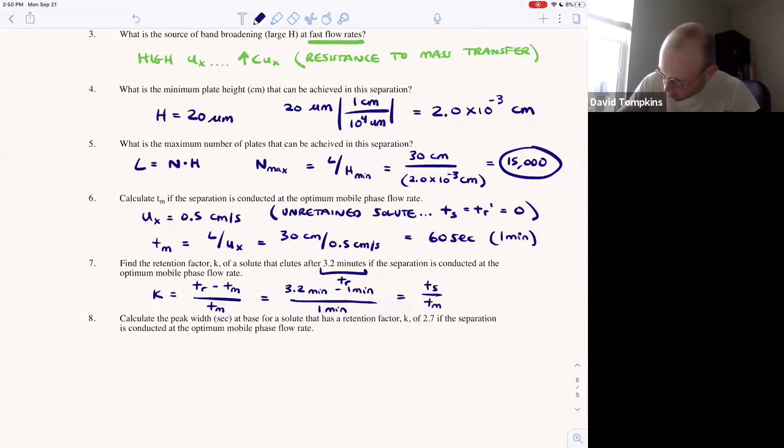relative to mobile phase is 2.2. Okay, for every 1 minute mobile, that compound spends 2.2 minutes stationary.